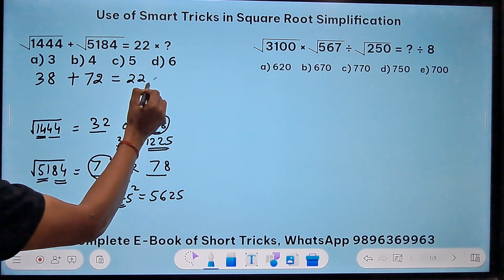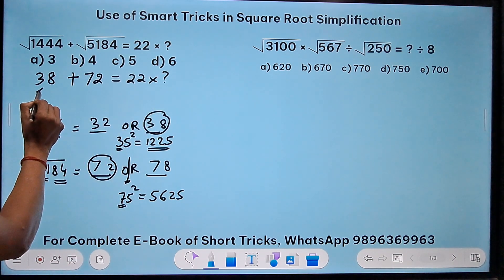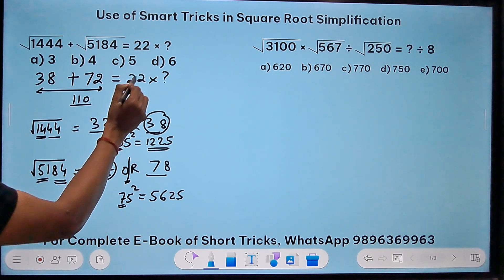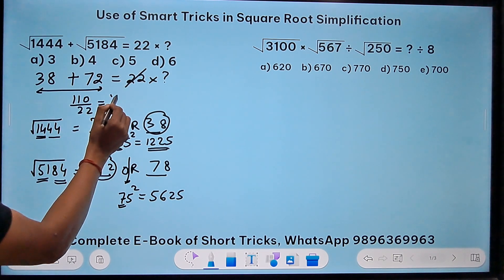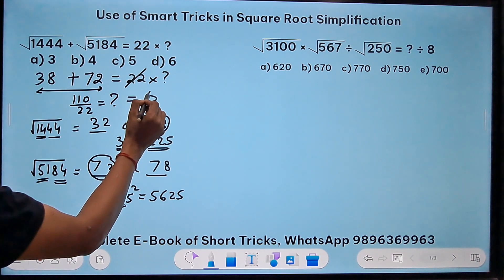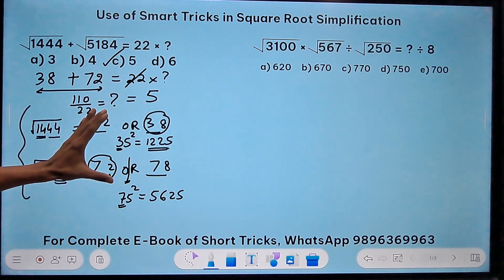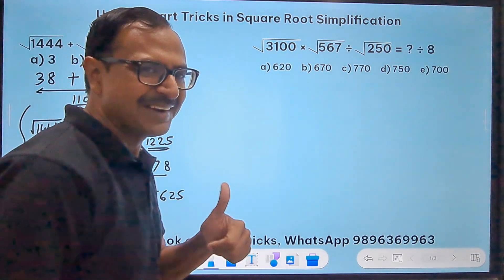So the smaller one, that is 72, is the answer for the question. And now 22 times what? Now the sum of these two is 110, and 110 divided by this number 22 will give you the question mark and the answer happens to be 5. So C is the correct answer. Now this is the trick.